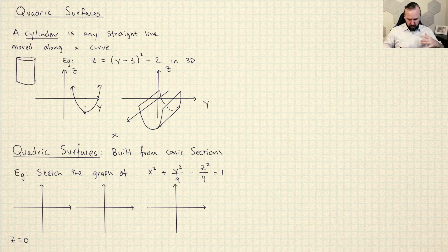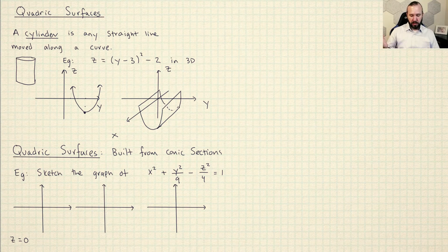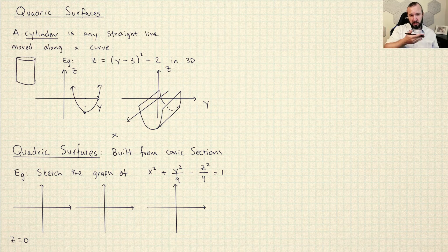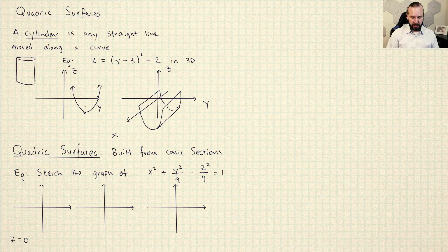Quadric surfaces are kind of the 3D analog of conic sections. So basically what they are is any kind of surface that you can build. And then when you slice that surface like vertically or horizontally or maybe this way, then you'll get the graph of a conic section.